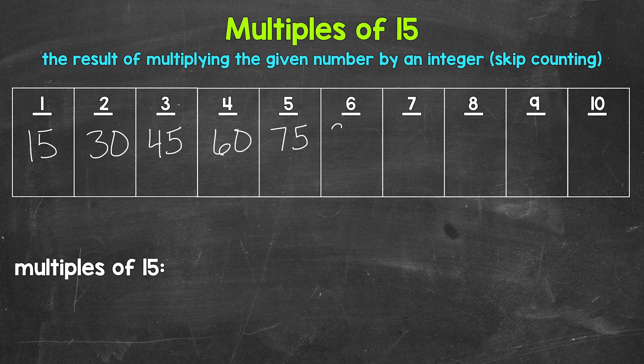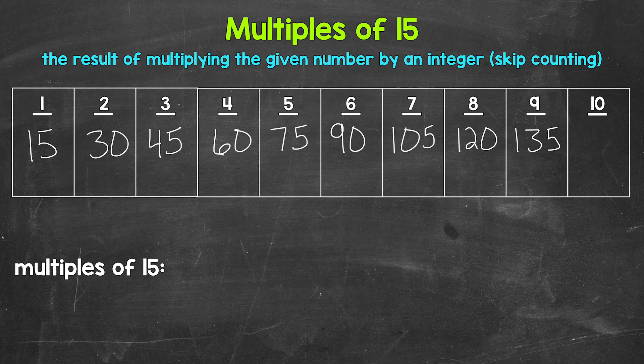Six times 15 is 90. Seven times 15 is 105. Eight times 15 is 120. Nine times 15 is 135. And 10 times 15 is 150.